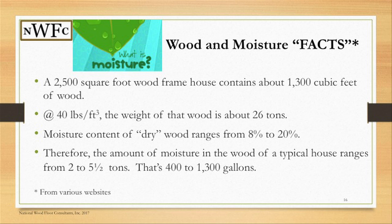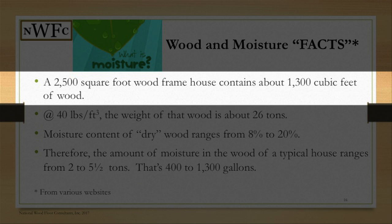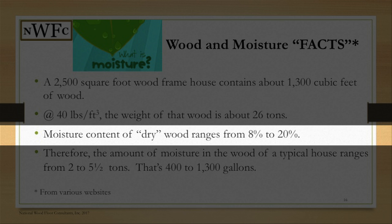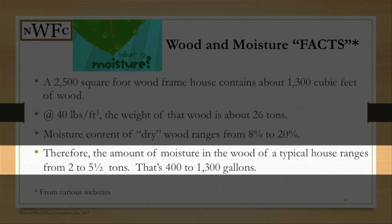Here are some simple wood and moisture facts. If we look at a 2,500 square foot house, it has about 13 cubic feet of wood and 40 pounds per square foot of weight — about 26 tons. Moisture content will range from 8% for finished products like millwork and trim, up to around 20% for construction products like timber and studs. In a typical house, you'll find about two to five tons of water — that's 400 to 1,300 gallons — held within the building.